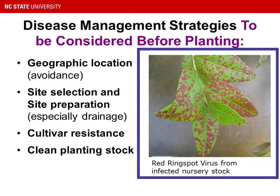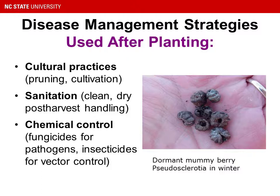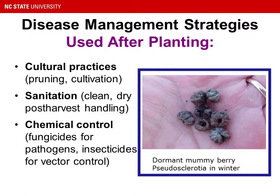Disease management strategies used after planting include things like cultural practices, pruning or cultivation, sanitation, how well you handle the fruit after it's harvested, and also chemical control. Fungicides for controlling pathogens and insecticides for controlling vectors that carry pathogens. The image here is a dormant mummyberry sclerotia or pseudosclerotia in the winter. This is the overwintering stage of mummyberry disease. With cultivation, you can bury these and reduce the amount of mummyberry in the field. That would be a cultural practice that would reduce disease.